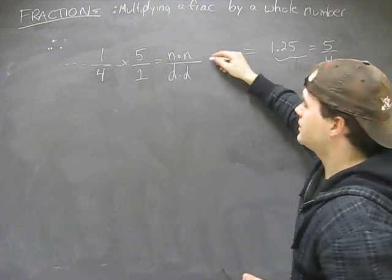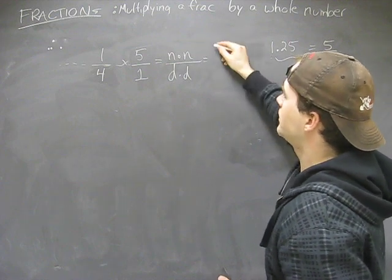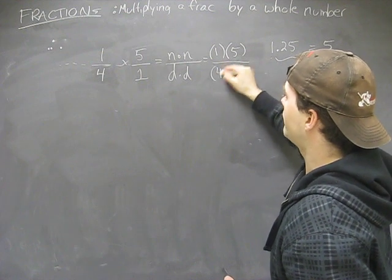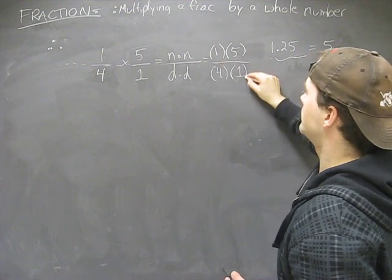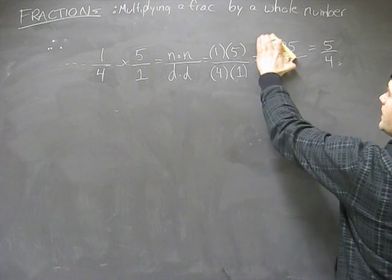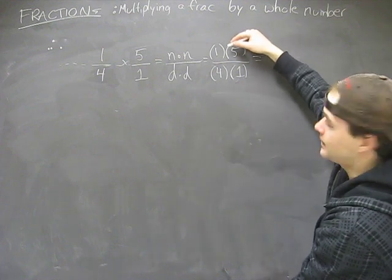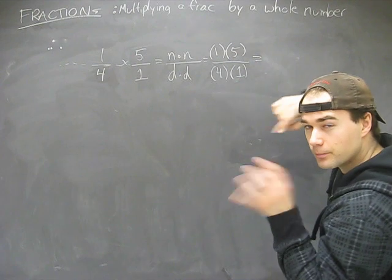Denominator times denominator. We already know this. And so what we really have is one times five over four times one. Ta-da! And that's how we get, well, one times one. When there are brackets like this, that means they're multiplied together, just back pocket info.